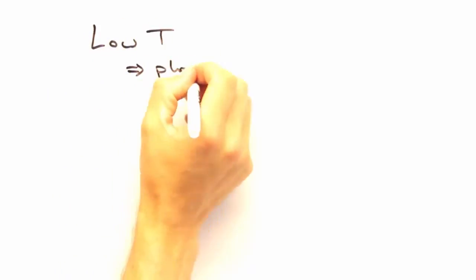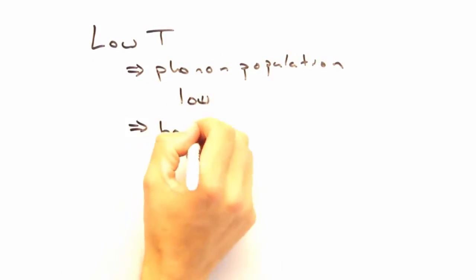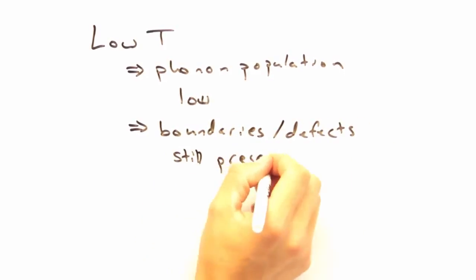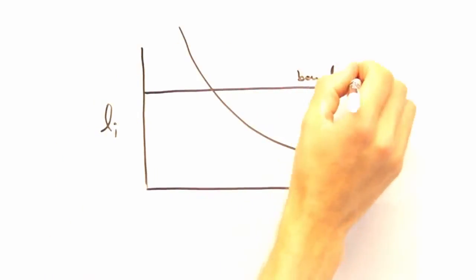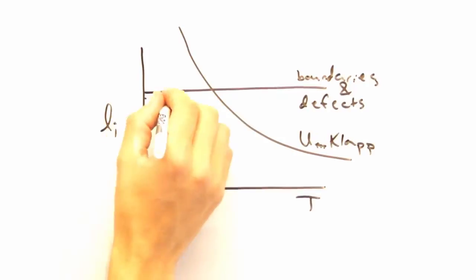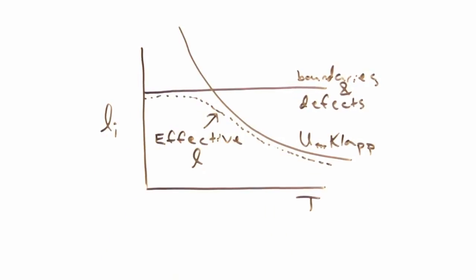At low temperature, though, we really only see boundaries and defects and get a constant mean free path, provided the boundaries and defect concentrations don't change much with temperature. Yeah, that's a good point. And we can plot the mean free path for each scattering source, as well as the net mean free path as a function of temperature.